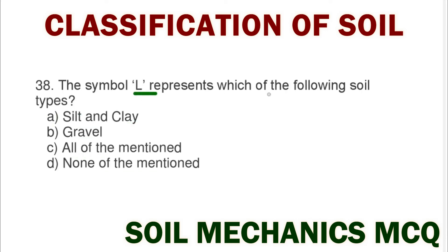Next question: the symbol L represents which of the following soil types? Option A silt and clay, option B gravel, option C all of the mentioned, option D none of mentioned. The correct answer is option A silt and clay.